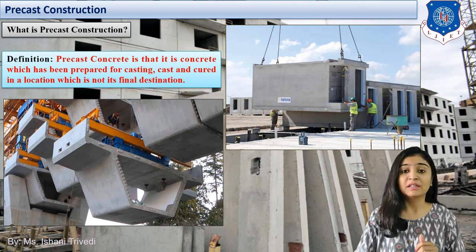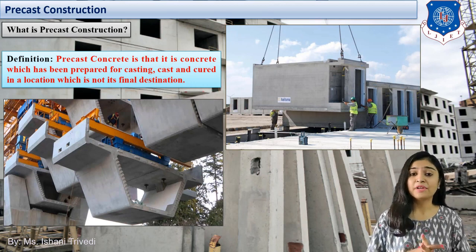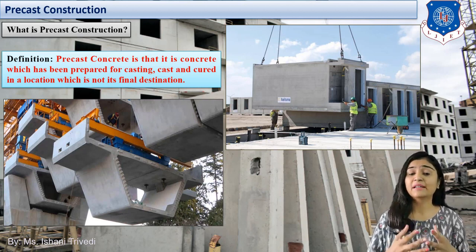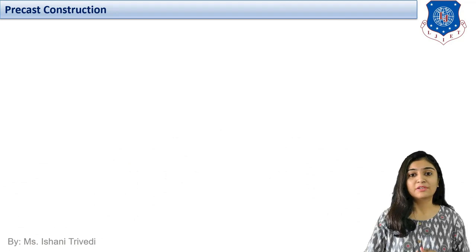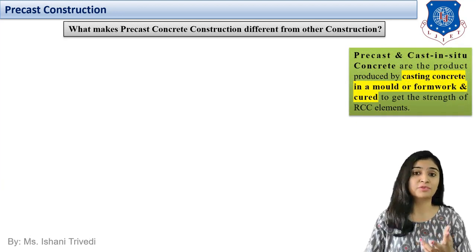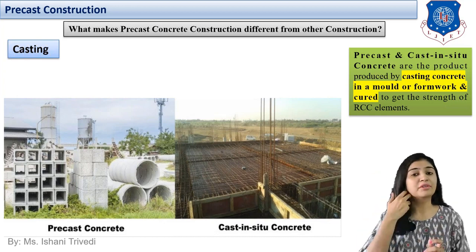This is a prefabricated structure. Currently in the world, prefabricated construction is ongoing — it has become a modern trend. Lots of examples exist all over the world, and even in our country, prefabricated construction is given much importance because of ease of construction, speedy work, and limited available spaces. There are many reasons why prefabricated and precast construction is ongoing. It can be considered modern technology. We are going to mainly focus on precast concrete structures.